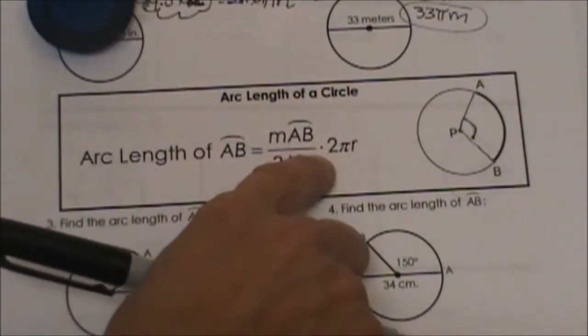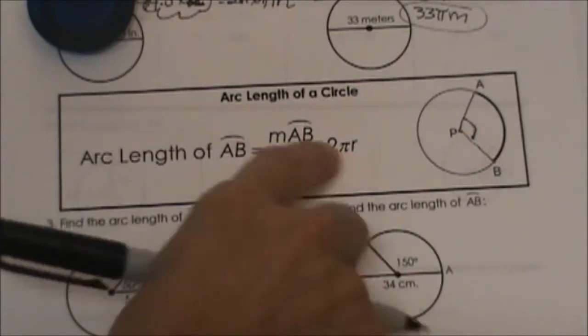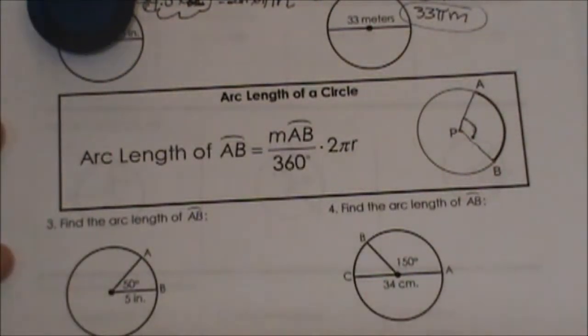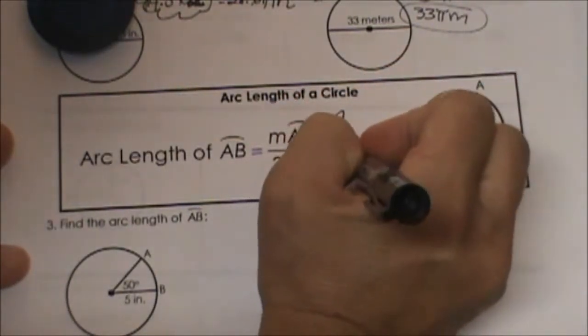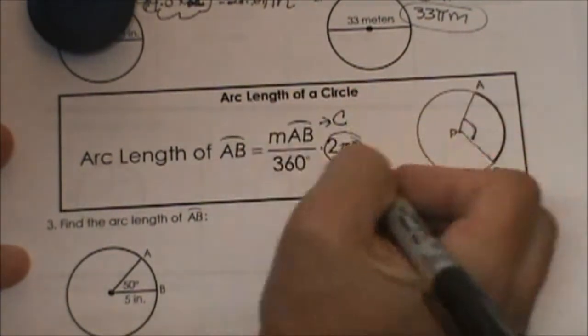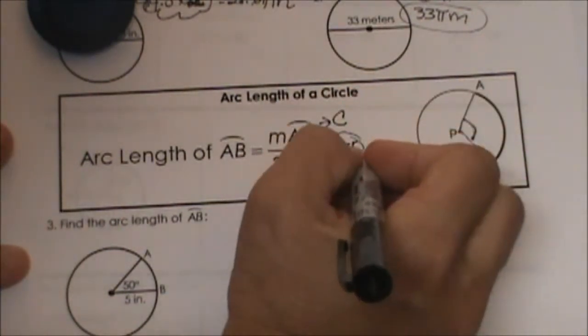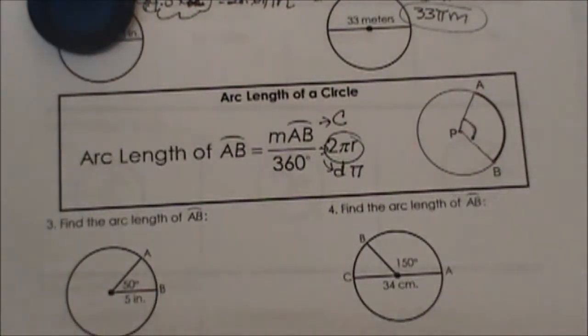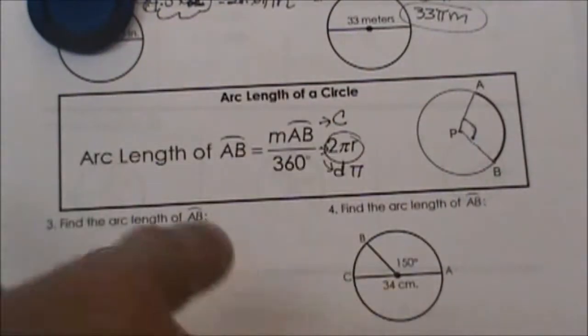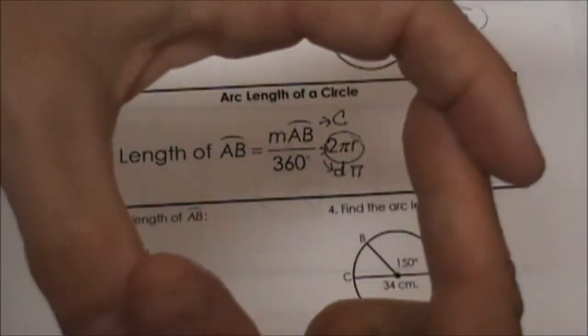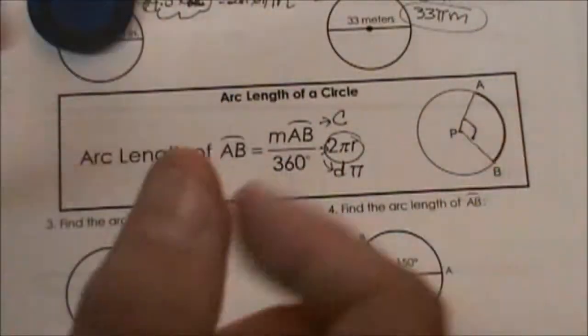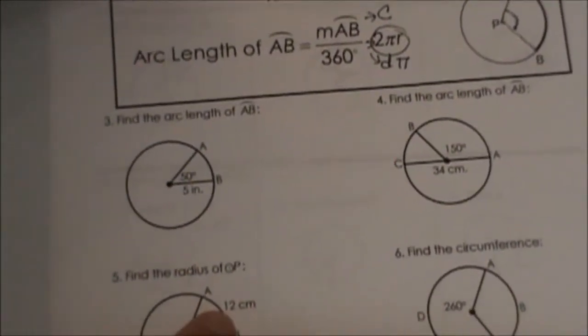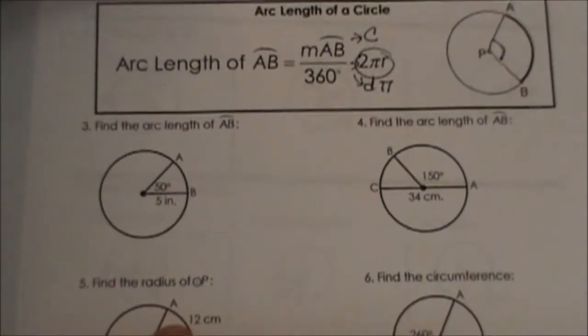So as a fraction of 360 times 2πr. Well, what is 2πr? 2πr is really just circumference, or dπ. So you can plug in circumference if you know it. You can use 2πr or dπ. All of those are interchangeable in this formula. So what we are going to do is find the circumference, and then we are going to multiply it by the fraction of the circle. So if you only know part of it, you would just take a fraction of the circle. So let's look at a couple of examples here and how they go back to this formula.